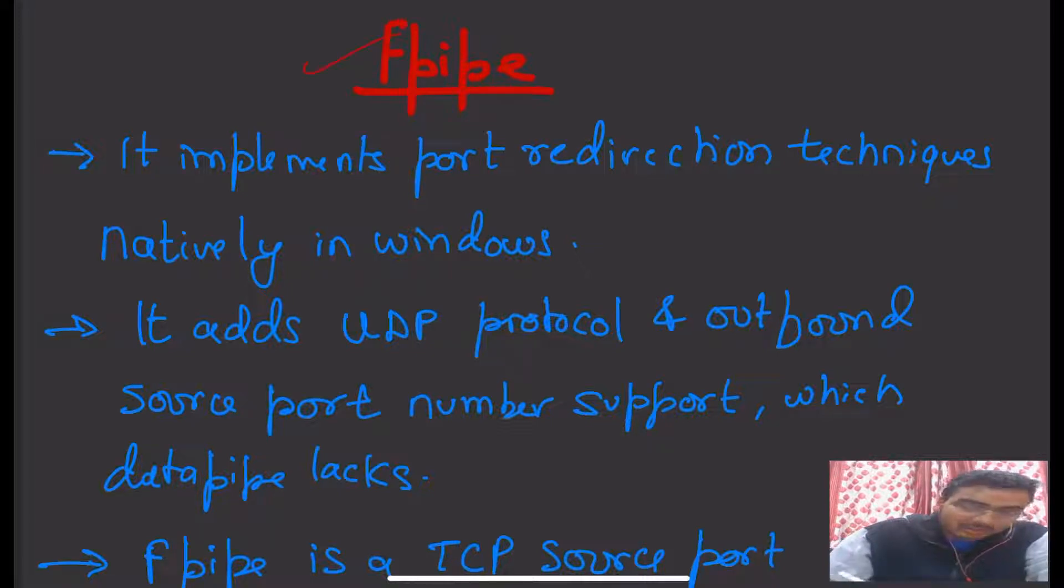In short, Datapipe was a port redirection tool for Unix-based systems, and F-Pipe implements port redirection techniques natively in Windows. The first difference between F-Pipe and Datapipe is that F-Pipe is used natively in Windows.